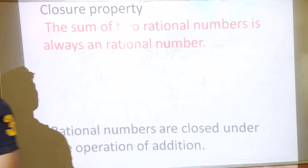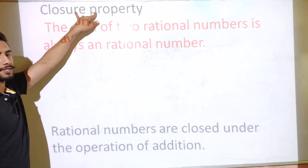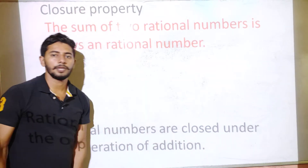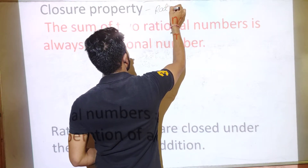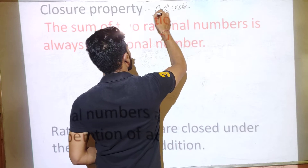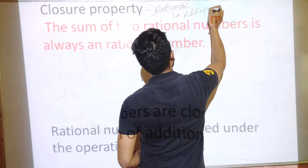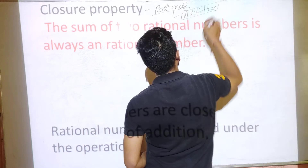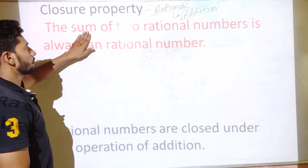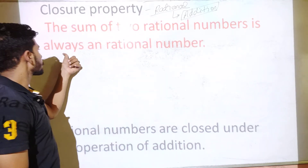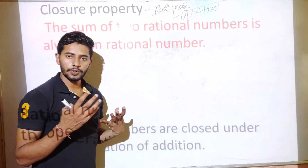So let's study about some properties. The first one is the Closure Property. We are talking about the closure property in rational numbers — specifically under the operation of addition.